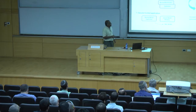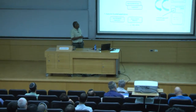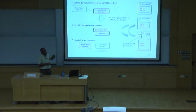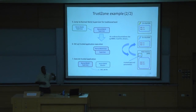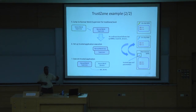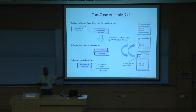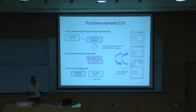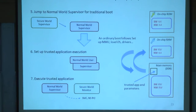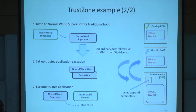On the secure world side, the supervisor schedules the application, performs checks — verifying the trusted application is signed by the correct authority — runs it, makes the signature, transfers the information back, and returns control to the normal world operating system. These APIs can be exposed as high-level calls like 'load this trusted application', which under the hood issue instructions like the SMC call.